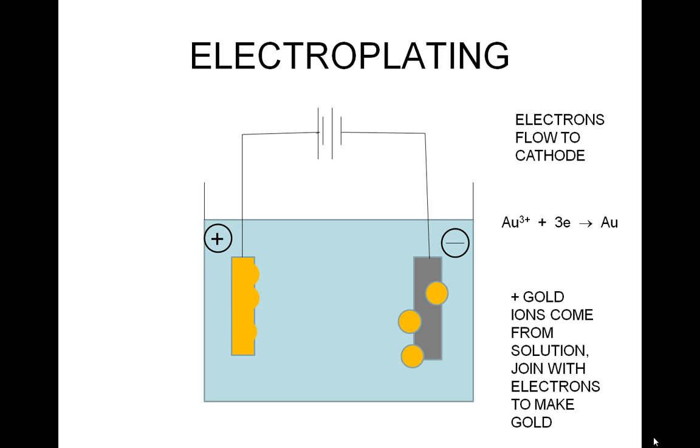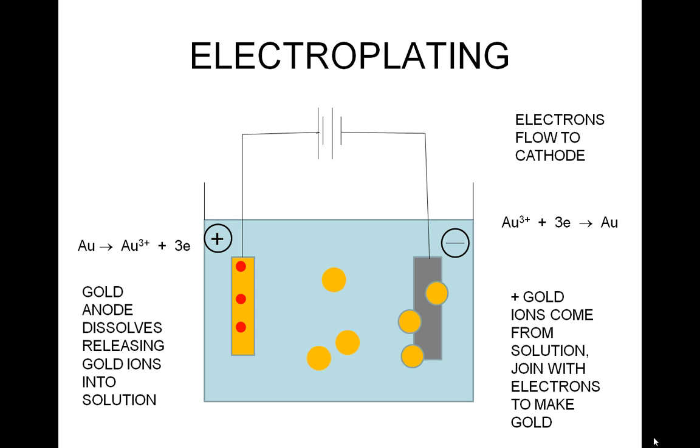Having removed the positive ions from the solution, they must be replaced to keep the solution neutral. So gold atoms from the anode dissolve into the solution. The equation for this reaction is Au → Au³⁺ + 3e⁻.